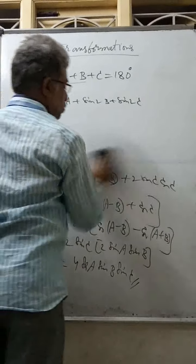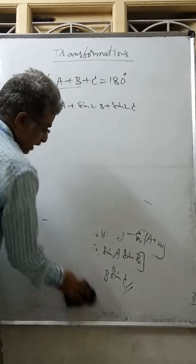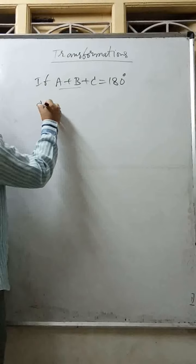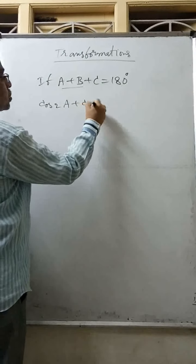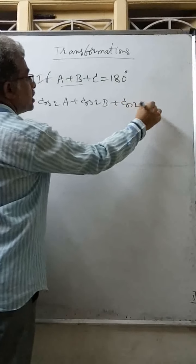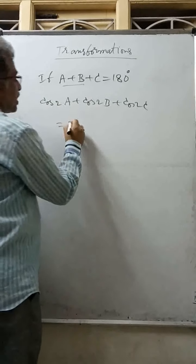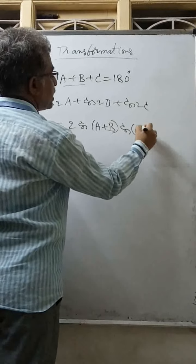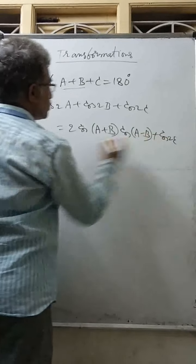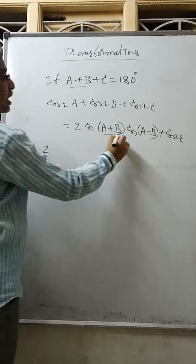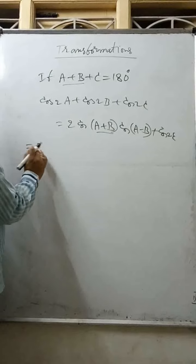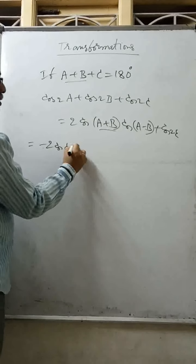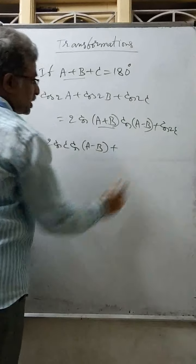Now, what happens for 2 sin A plus sin B plus sin C? The result is 1 minus 4 sin A cos B cos C. Similarly, what happens for sin A plus sin B plus sin C? Using sin C plus sin D formula, it becomes 2 sin((A+B)/2) cos((A-B)/2) plus sin C. Since A+B = 180 minus C, sin((A+B)/2) becomes cos(C/2)... giving minus 2 cos C cos(A-B).